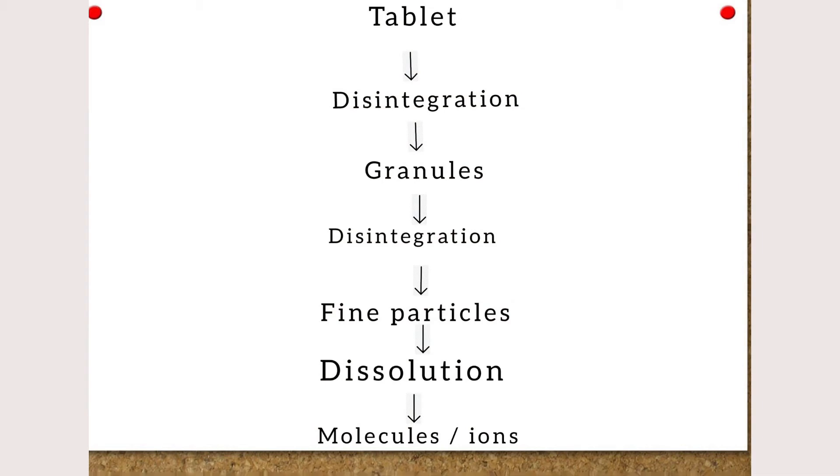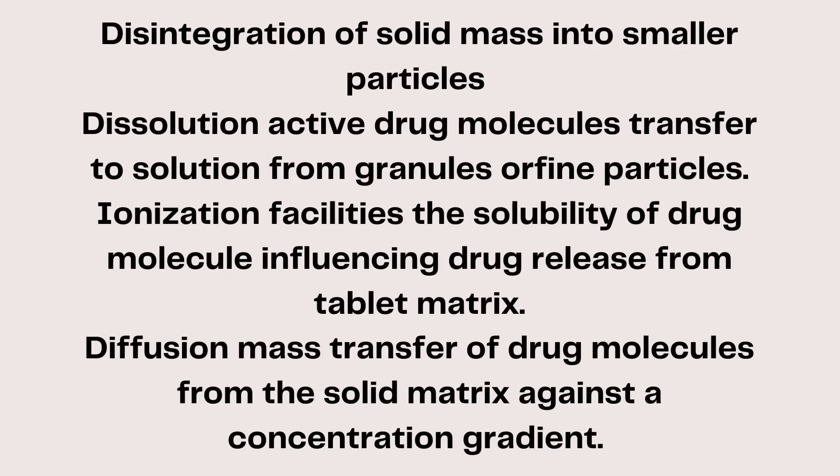The procedure is: tablets disintegrate into granules, granules disintegrate into fine particles, then dissolution occurs. Dissolution involves the transfer of active drug molecules from granules or fine particles into solution. Ionization facilitates the solubility of the drug molecule, influencing drug release from the tablet matrix. Diffusion involves mass transfer of drug molecules from the solid matrix against a concentration gradient.